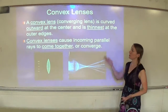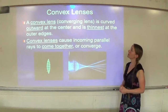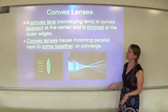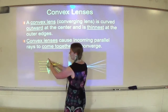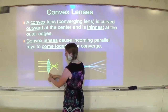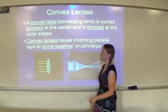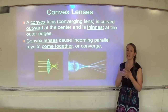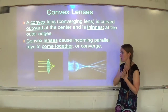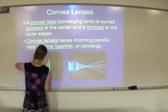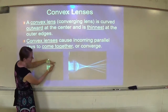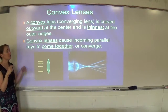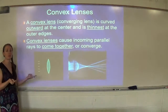A convex lens, on the other hand, is known as a converging lens. It's curved outward at the center and is thinnest at the outer edges. Convex lenses cause incoming parallel rays to come together or converge. You can see those lines coming in and converging at an actual focal point, which means it can form a real image.